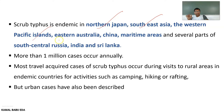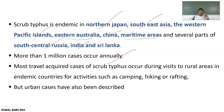Scrub Typhus is endemic in northern Japan, Southeast Asia, western Pacific islands, eastern Australia, China, maritime areas, parts of south-central Russia, India, and Sri Lanka. More than one million cases are occurring naturally each year.